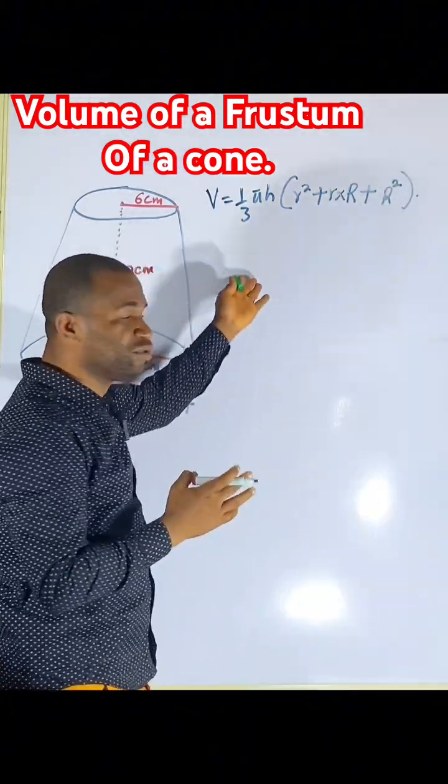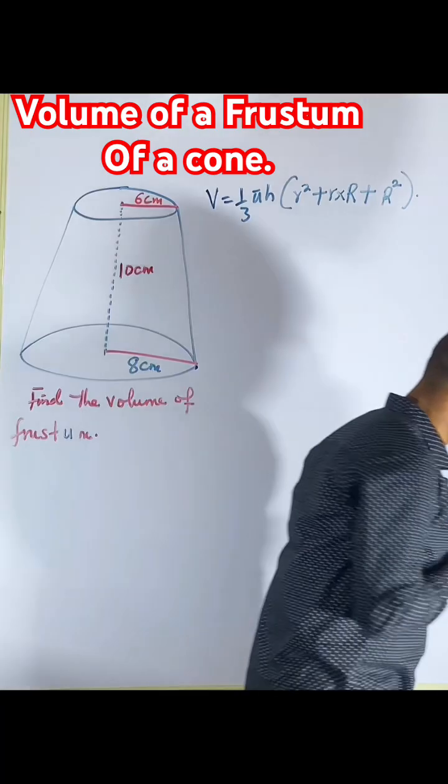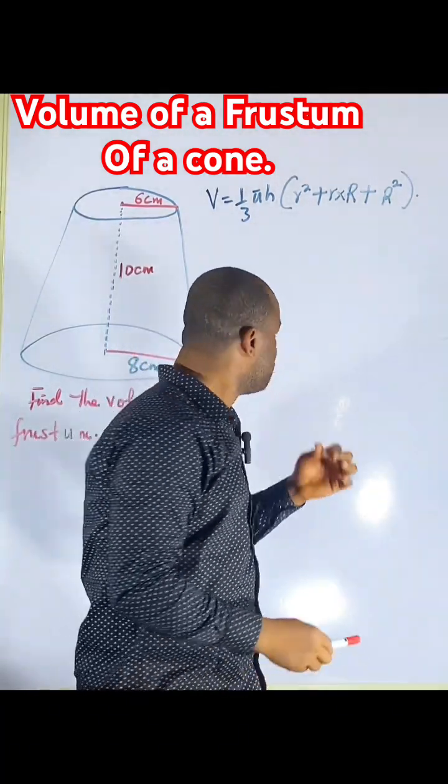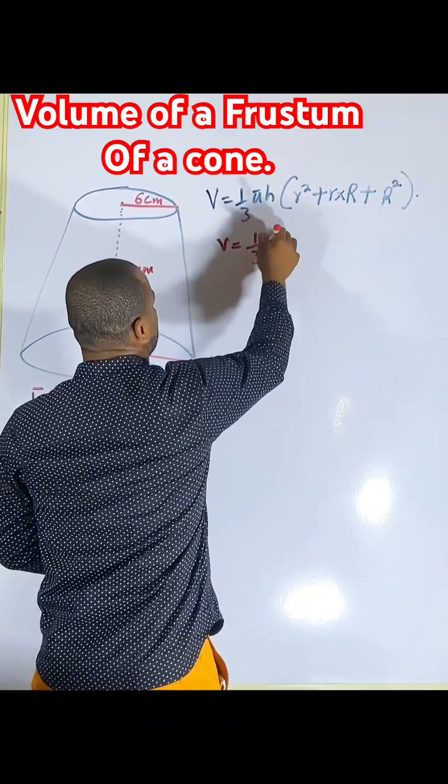Now with this we are going to put in the values. V is equal to 1 over 3, remember,